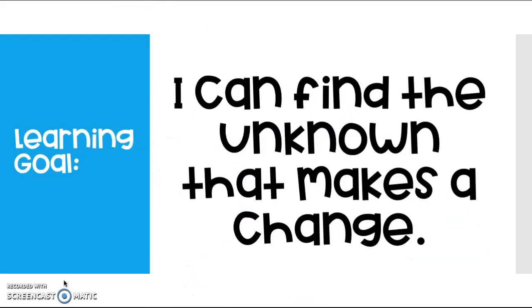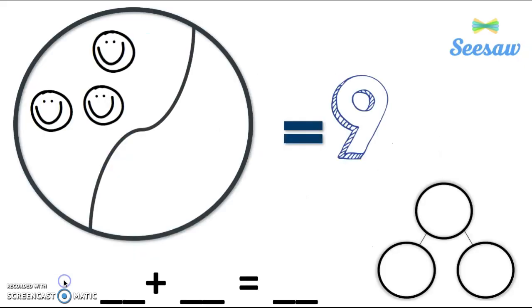You know what? Our learning goal was that I can find the unknown that makes a change, and that's exactly what we've been doing this entire time. We've just been using a picture to help us figure it out. So now it's your turn. This is what I want you to seesaw to me. If you'll notice, I have a circle right there. See it? And there are three smiley faces. That's one of the parts that I've already told you. I want you to draw the picture just as you see it and have it equaling nine. Then I want you to draw the unknown in this little spot, write a number sentence using those two parts in a whole amount, and then fill in the number bond. It's quite a bit of work, but you know what? You're amazing at all of this, so it should be good for you. Good luck, friends.